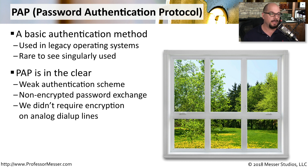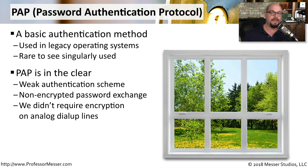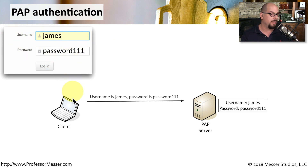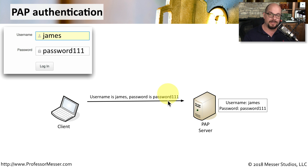That's because PAP communicates in the clear. There's no encryption or any additional security of the information that you're sending using this Password Authentication Protocol. We didn't need encryption over the dial-up lines we were using because there was no mechanism for someone else to sit in the middle of that conversation and grab that data. You would put your username and your password in at a prompt, and you would log in. The response from your client might say that your username is James and the password is password111, and you can see that is all sent across the network in the clear.